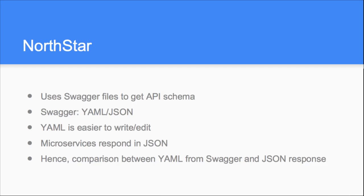Swagger files can be written in either YAML or JSON. Most developers and QA people already have them in YAML, and YAML is easy to write and edit — you don't put quotes and brackets everywhere. So we stuck with YAML, and that's how we ended up with YAML data. Microservices generally respond with JSON regardless, so that's how we ended up with JSON data.